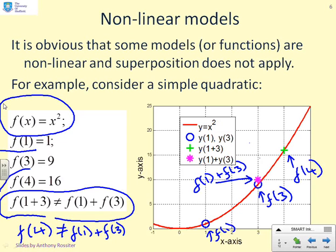The point behind this example is to show that using strict mathematical definitions, it's easy to show that quadratic does not satisfy superposition and therefore it's not linear.